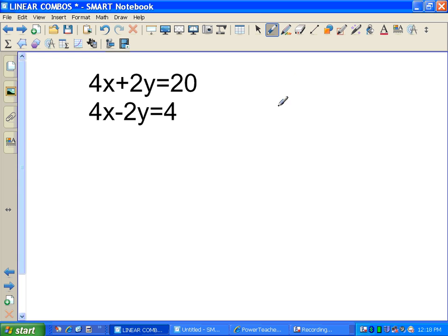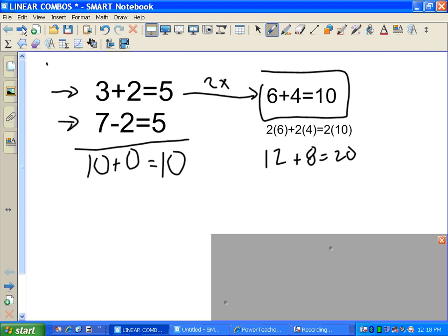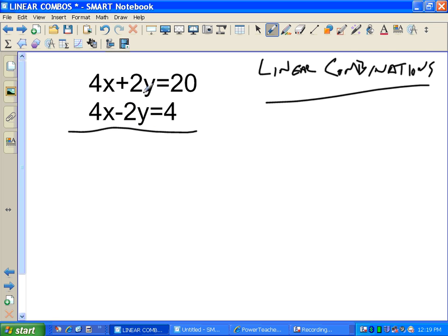All right, so now on to actual equations. The method that we're using is called linear combinations. There it is, linear combinations. What we're going to do, we've got this equation, which is true. We've got that equation also true. We're just going to add the two equations together, like we did back here with 3 plus 2 is 5, and 7 minus 2 is 5. Let's see what happens.